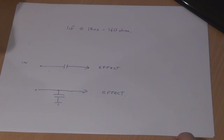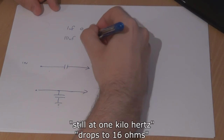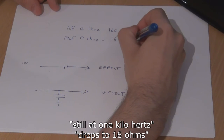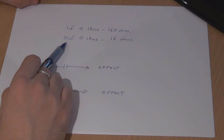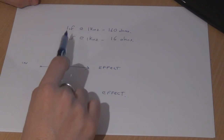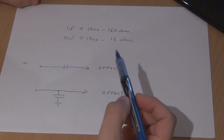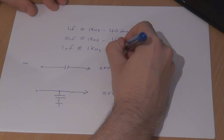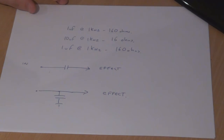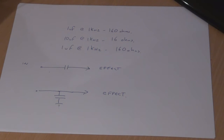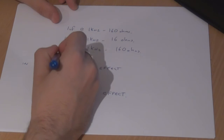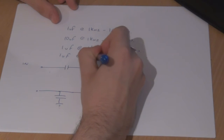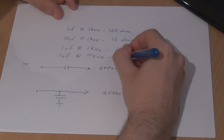Just do a Google search for a reactance calculator and you'll see two fields: one for capacitance and one for frequency. If we increase to 10 microfarads at the same frequency, the resistance drops. As capacitance increases, resistance decreases. Going the other way: one microfarad at one kilohertz is 160 ohms, but increase the frequency to 10 kilohertz and we get 16 ohms. So as we increase the frequency, we reduce the resistance.